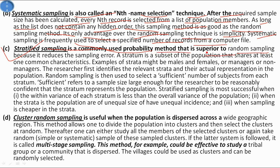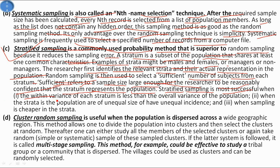Stratified sampling is a commonly used probability method that is superior to random sampling because it reduces sampling error. A stratum is a subset of the population that shares at least one common characteristic — for example, males, females, managers, or non-managers. The researcher identifies the relevant strata and their actual representation in the population, then uses random sampling to select sufficient subjects from each stratum. Stratified sampling is most successful when within-stratum variance is less than overall population variance, when strata are of unequal size or unequal incidence, or when sampling is cheaper within the strata.